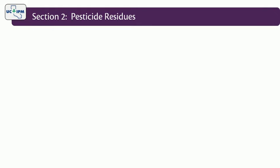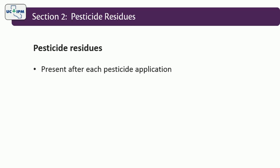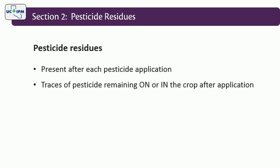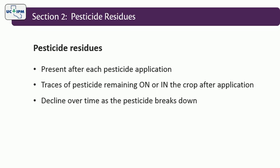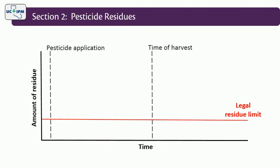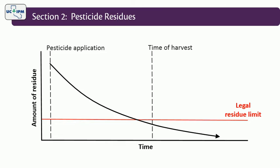When a pesticide is applied, pesticide residues are present even when you follow all label instructions properly. Pesticide residues are the traces of pesticide compounds that remain on or in the crop after they are applied. Pesticide residues decline as the pesticide breaks down over time, so the levels of residues are highest immediately after the application and diminish as the crop continues to grow.